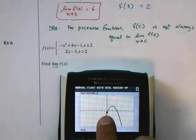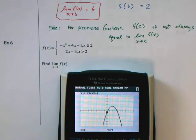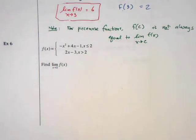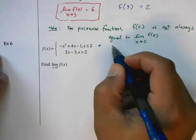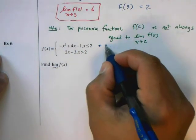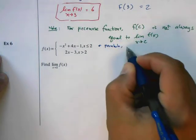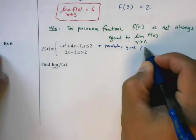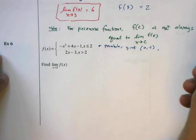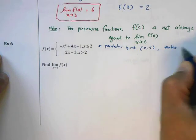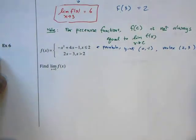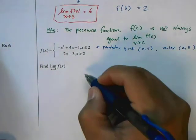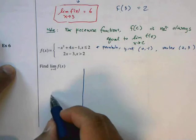You can see this is a function with a y-intercept of negative 1, and a vertex that looks like it's at (2, 3). So I'm going to graph that here. The first function, this top part, is a parabola with a y-intercept at (0, -1) and a vertex at (2, 3).